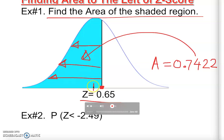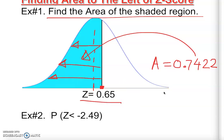So we don't have to do anything extra. This is more than 50%, and in this case we found 74%. This is how we find the area to the left of z. Let's take a look at another example.